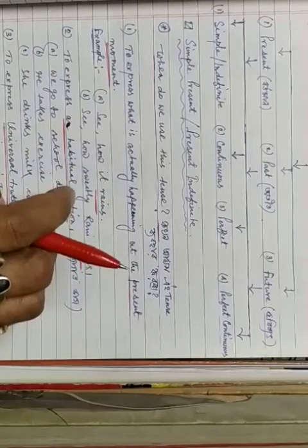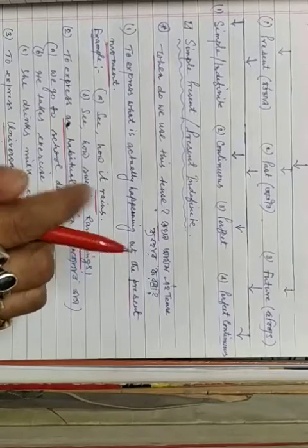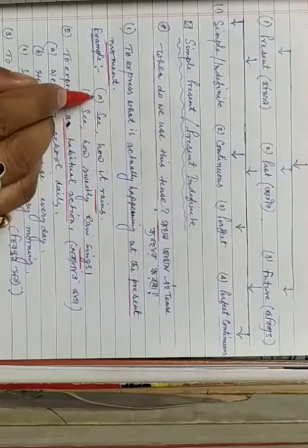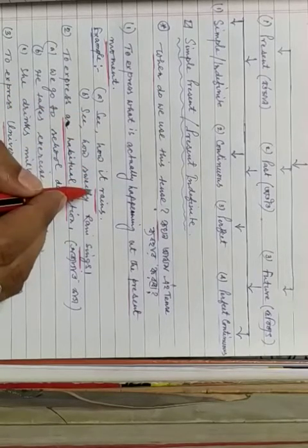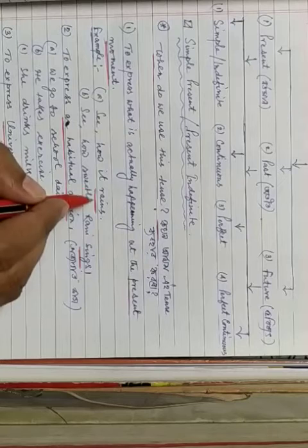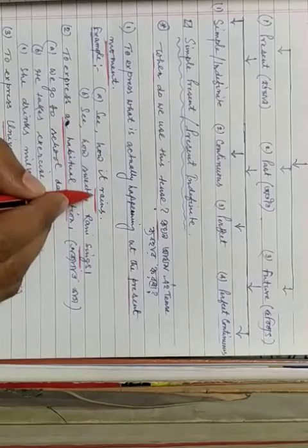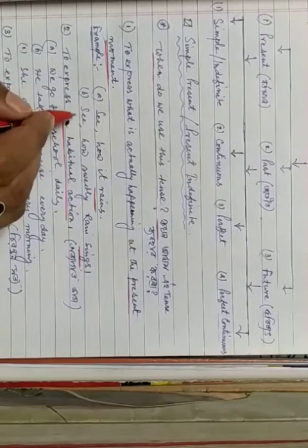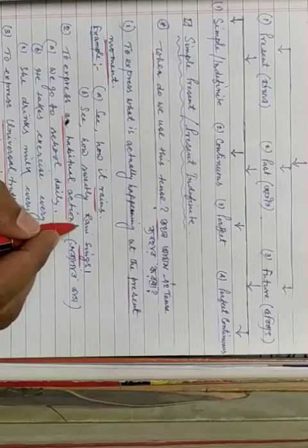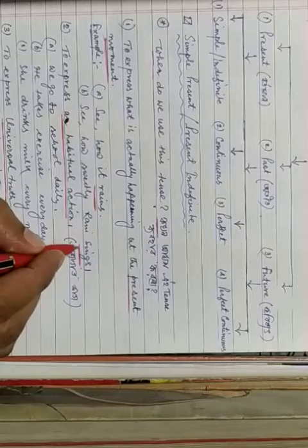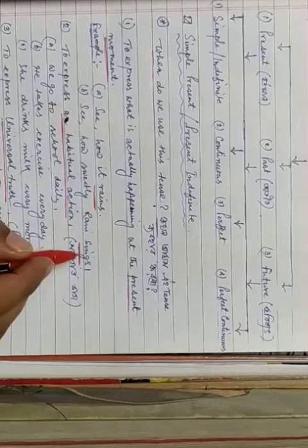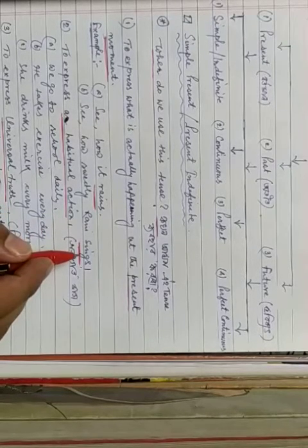That means we use the simple present tense for this. I wrote this example: 'See how it rains' — this uses the present form, so it is simple present tense. Another example: 'See how sweetly Rani sings' — here 'sings' is in simple present tense.